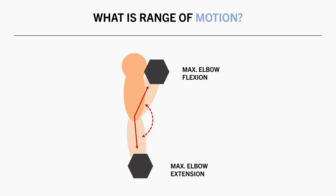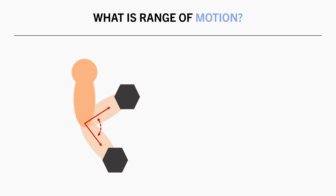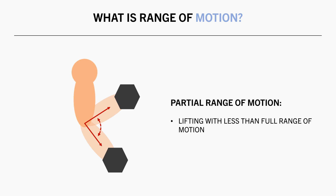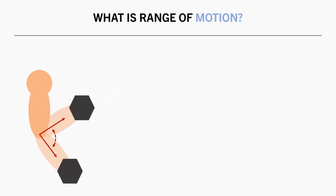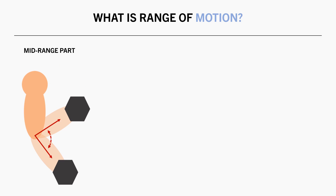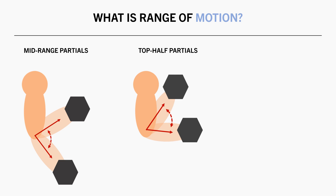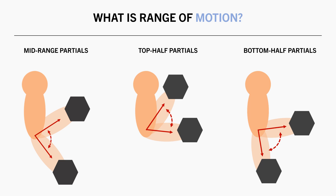Once the full range of motion is determined, partial range of motion can then be defined as lifting with anything that isn't full range of motion. However, partial range of motion can be performed in different ways. For example, you could perform a bicep curl in just the mid range of the exercise, you could perform just the top half, or just the bottom half, or at any other portion of the exercise.